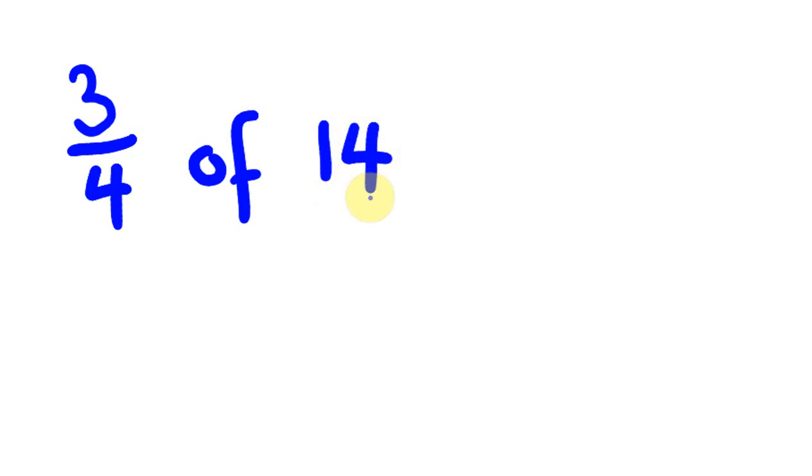So what about we do this. What about we work out now three quarters. And we'll work this out of, what about we do this out of, I'll do a low number to start off with. Something like 14. Three quarters of 14. So what's the answer to this going to be. So we're still doing that same thing. We're dividing and timesing.